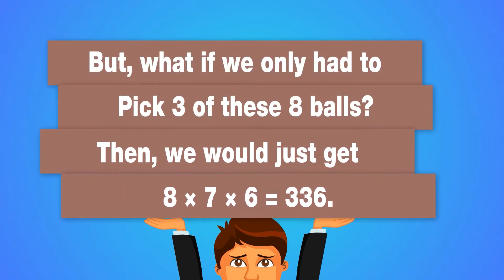But what if we only had to pick 3 of these 8 balls? Well then we would have 8 choices for our first ball, 7 choices for our second ball, and 6 choices for our third ball. Then we would just get 8 times 7 times 6, which would give us an answer of 336.